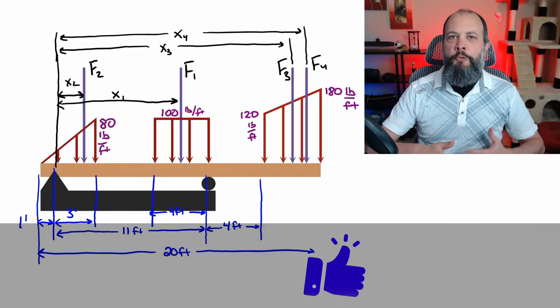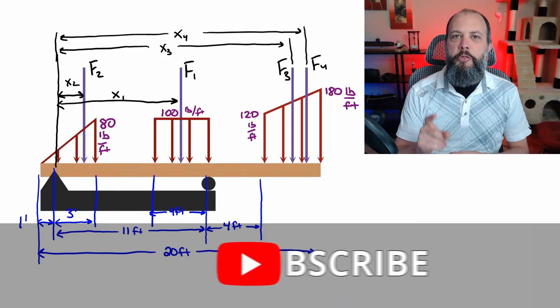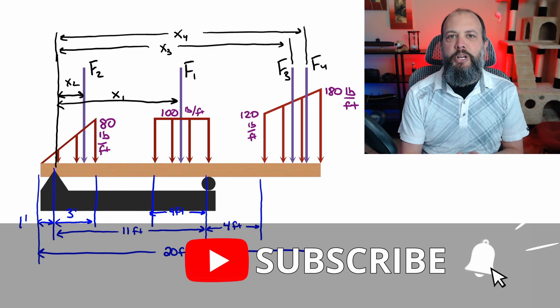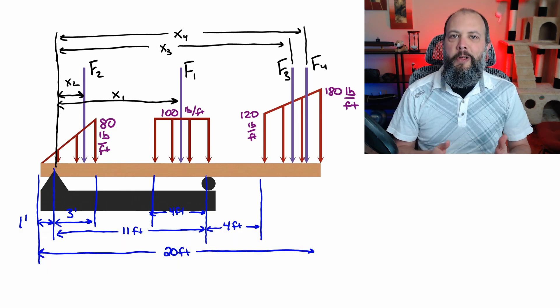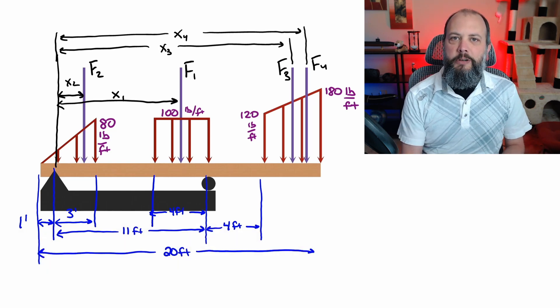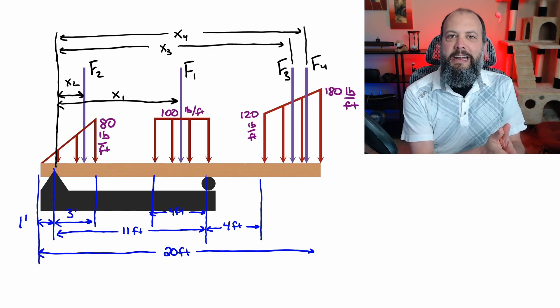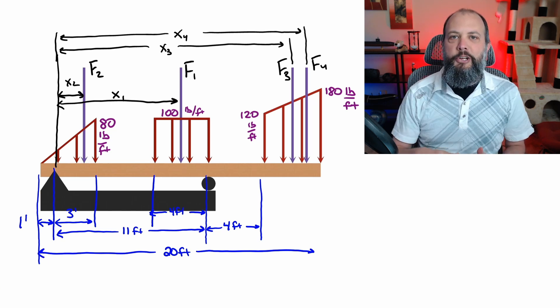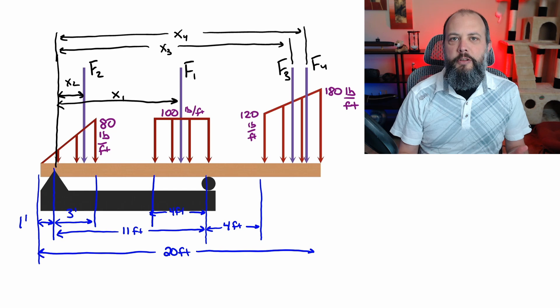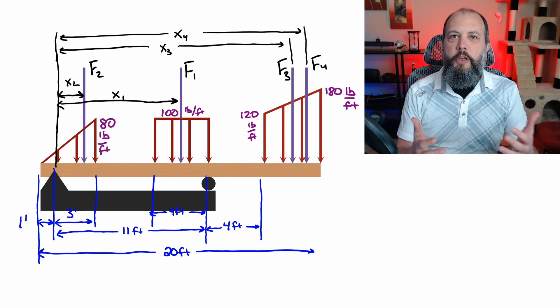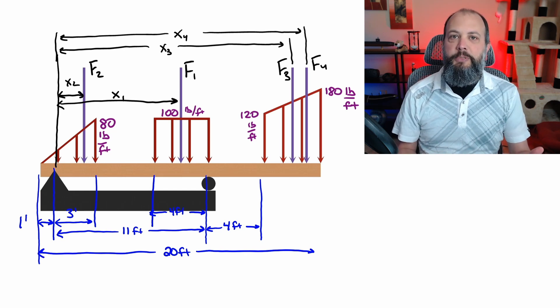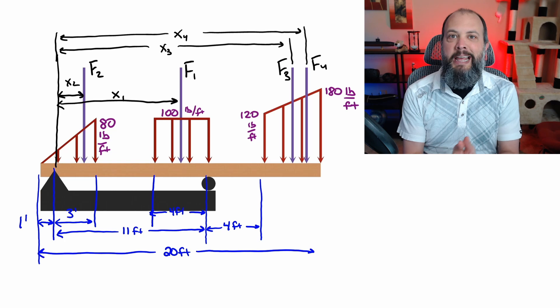Replacing a distributed load with a point force requires finding both the magnitude of the force, which I'm labeling as F, and also the line of action of that force, which I'm labeling here as X, as a distance from that leftmost pin joint. You're going to solve for F the magnitude of the force using area under the curve. For these geometric shapes, it's just going to be the area of rectangles and triangles.